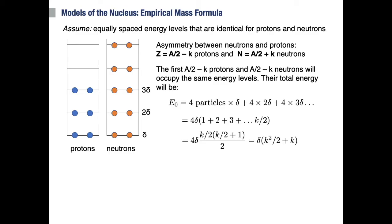If delta is the difference in energy between two subsequent levels, for the first A/2 minus k protons and neutrons, we'll have four particles—2 plus 2—in the first level, four particles in the second level, and so on. If we take 4 delta as a common factor, then we have 4 times delta times 1 plus 2 plus 3 plus k/2 terms. With a bit of algebra, we find a term that is proportional to delta times k squared over 2 plus k.